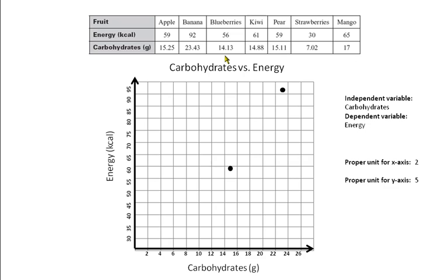Next, the blueberries. 14.13 is going to be just a little bit past the 14, then we go up to 56 — just a tiny bit past 55 — and we add a point right there. Now 14.88 is really close to both the 15.25 and the 14.13. Try to make sure your dot is kind of in between these two, but for the purposes of putting dots on a screen, it's going to be in line with one of them.